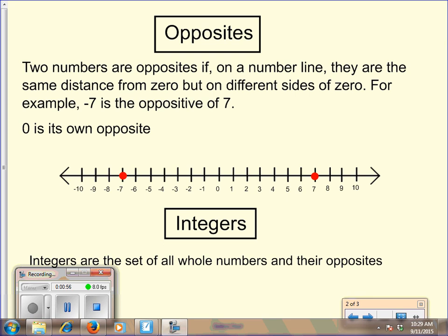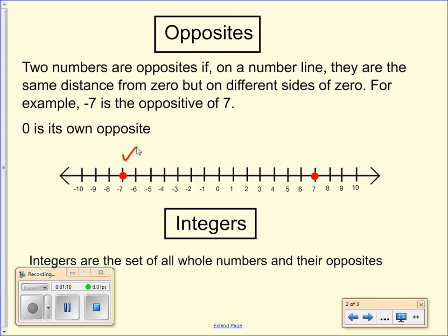Numbers have opposites. Two numbers are opposites if, on a number line, they are the same distance from zero but on different sides of zero. For example, if we look at negative seven, the opposite of negative seven is positive seven.